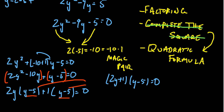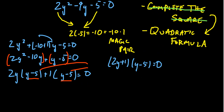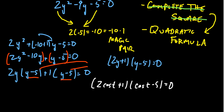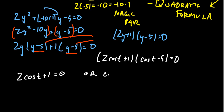Now let's return to the original setting. We made the substitution y = cos(t), so let's put y back into the equation. We're looking at (2cos(t) + 1)(cos(t) − 5) = 0. We factored the quadratic trigonometric polynomial using y as a helper variable. Now that we have it factored, we can use the zero product property: the only way a product equals 0 is if one factor equals 0. So either 2cos(t) + 1 = 0, or cos(t) − 5 = 0.